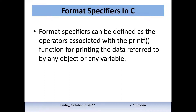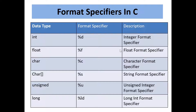Here are the most common format specifiers in C programming. We have int, which is the integer data type, and we use %d as its format specifier. I'm going to show you in the code how to use these format specifiers. We also have float, which uses %f as its format specifier.